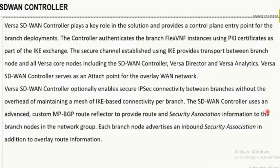Going into more detail on the controller: every time a branch is discovered, the controller authenticates the branch using certificates as part of the IKE exchange. You can use a certificate or a pre-shared key during discovery time, and later all keys are dynamically generated. It establishes a secure tunnel between the branch and all the Versa core nodes — meaning the SD-WAN controller, Director, and Analytics.